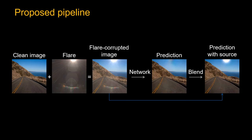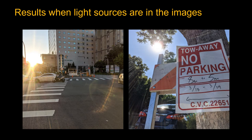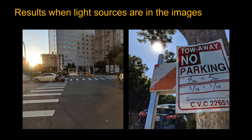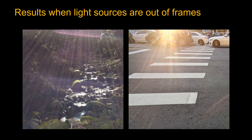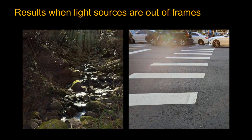Now I've talked about the entire pipeline. Let's take a look at the results. Here are real input images, and here are the output results. Note that even though our model is trained purely in a synthetic way, it generalizes well to real data. Here are examples when the light source is out of view — the flare appears quite different from the previous cases, but our model still works well for those cases.